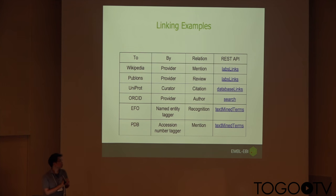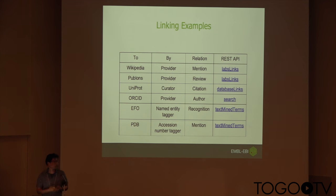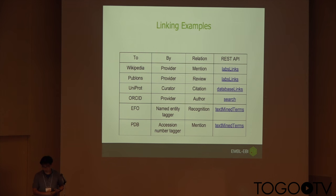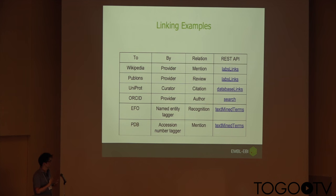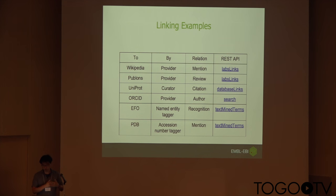We also do text mining — EFO is one example. We mine EFO terms and link them to the literature. For the moment, what we are really focusing on is mining accession numbers, like PDB or UniProt or other databases. We apply our accession number tagger, and once we find those mentions in full-text articles, we link those accession numbers between those databases and articles.